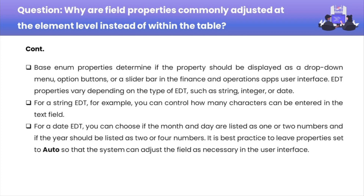In the case of a date EDT, you can choose if the month and the day are listed as one or two numbers, and if the year should be listed as two or four numbers. It is best practice to leave properties set to auto so that the system can adjust the field as necessary in the user interface.